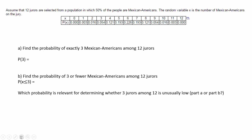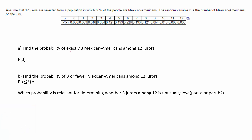We're given this table of data that says: assume that 12 jurors are selected from a population in which 50% of the people are Mexican-Americans. The random variable x — this row — is the number of Mexican-Americans on the jury. So this is saying the probability there will be none is zero, and the probability all of them would be Mexican-Americans would also be zero. So different probabilities.